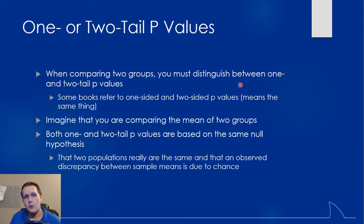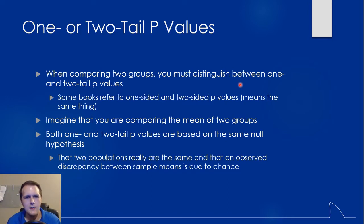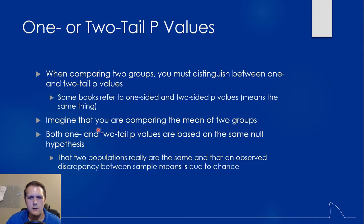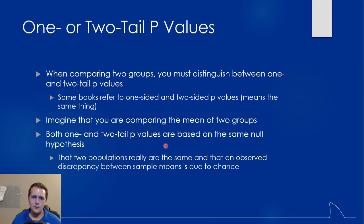There's a concept of one or two-tail p-values. Some books may call this one-sided versus two-sided — they mean the same thing. The question is: what information do you have going into the experiment? Do you have an idea beforehand of which way your values are going to go — who's going to be bigger or larger? If you're comparing the means of two different groups, your null hypothesis is going to be that there's no difference between the two, and if there is any observed difference it's just due to random chance.